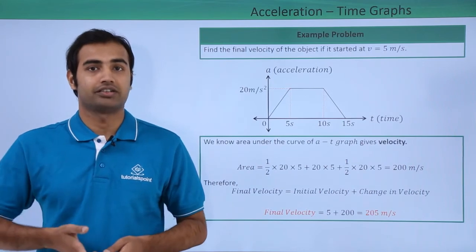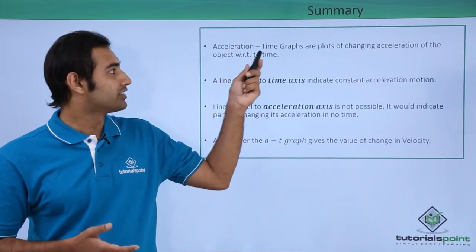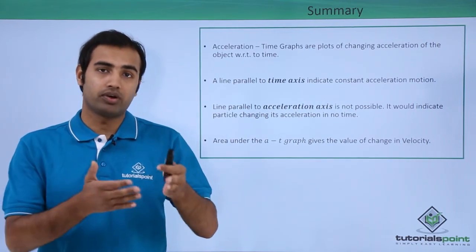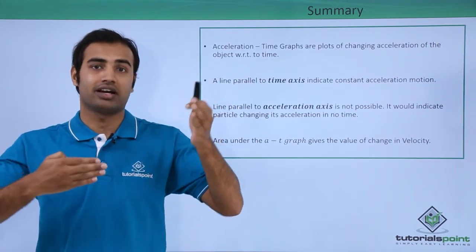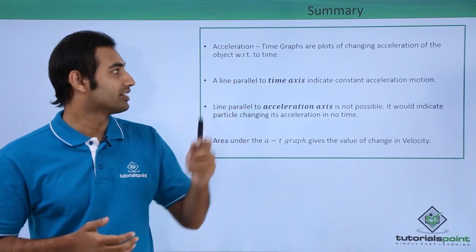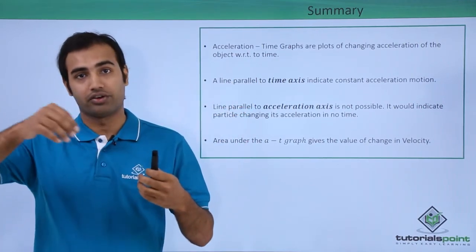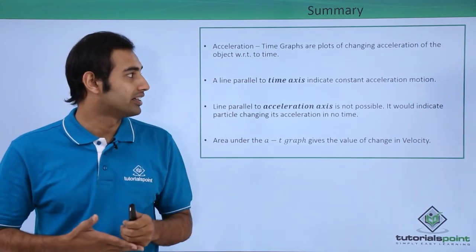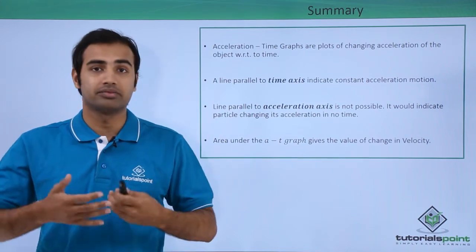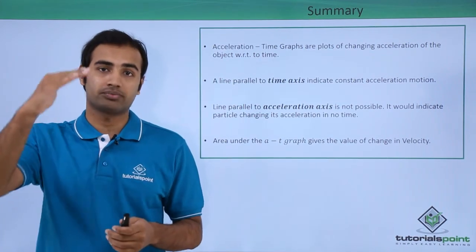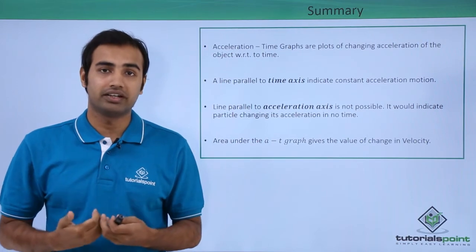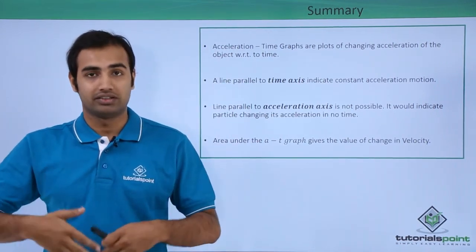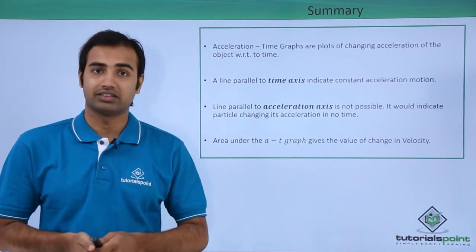So summarizing what we just learned, I can say that acceleration time graphs are plots of changing acceleration of an object with respect to time. So we plot acceleration along the y-axis and time along the x-axis, and how the acceleration changes we actually draw it on the graph—that's AT graphs for you. Then a line parallel to time axis indicates constant acceleration motion. So if we have a horizontal line which is parallel to time axis, it simply indicates that as the time keeps on progressing, the acceleration value is not changing. This indicates we have a constantly accelerated motion.